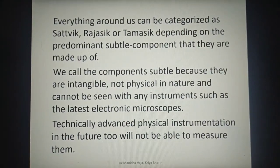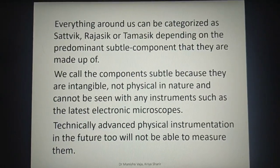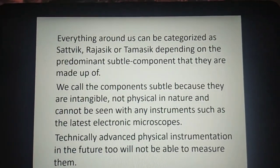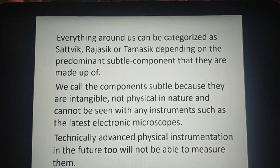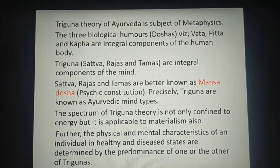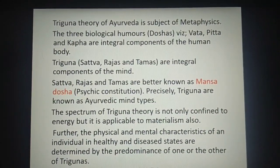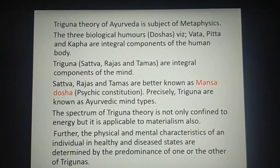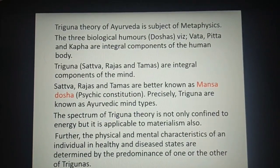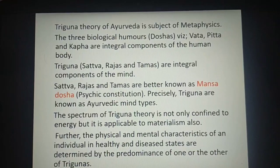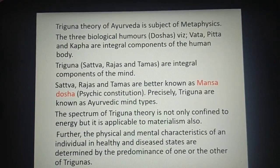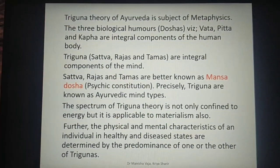Just as we cannot see the three Doshas, we also cannot see the three Gunas in their state — we can't see them, but we can experience the functions of the three Gunas in the body. The three Guna theory of Ayurveda is a subject of metaphysics. The three biological humours, which are the Doshas — Vata, Pitta, and Kapha — are integral components of the human body, and similarly the three Gunas — Sattva, Rajas, and Tamas — are integral components of the mind.